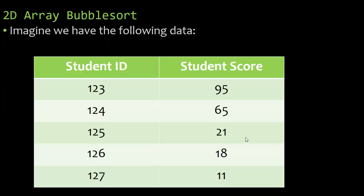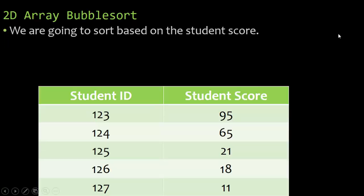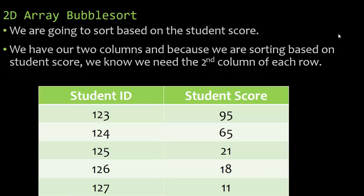So imagine we have the following data. We have student ID, which is going to be column 1, and student score, which is column 2. So we're going to sort based on the student score. Now we have our two columns, and because we are sorting on student score, we know we need the second column of each row. My rows go horizontal, my columns go vertical.